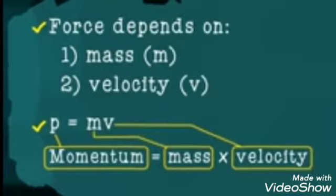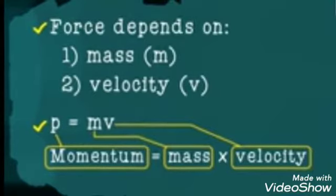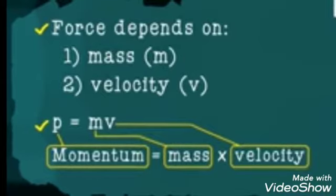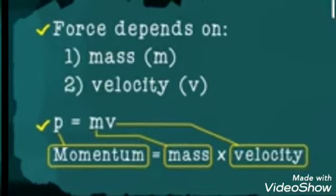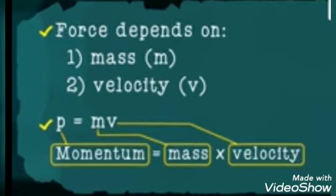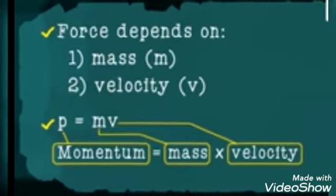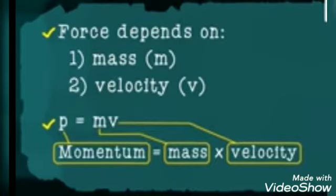Mass and velocity cause the linear momentum. Force depends on mass and velocity. So force mainly depends on mass as well as velocity, which we call as the linear momentum.